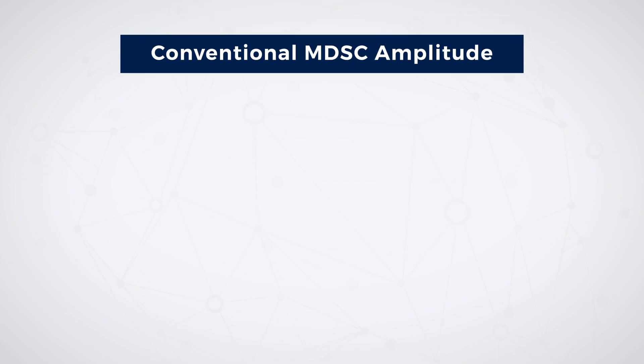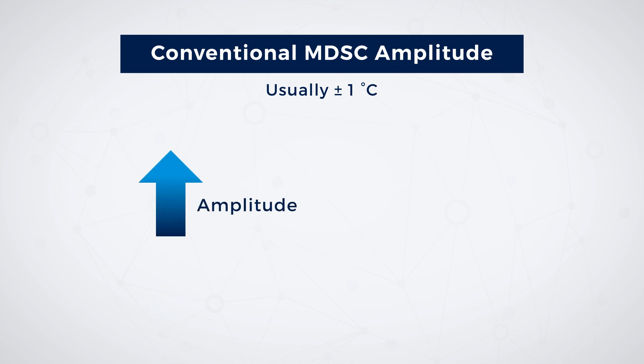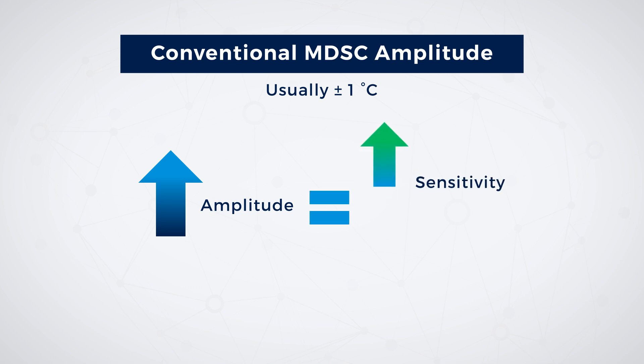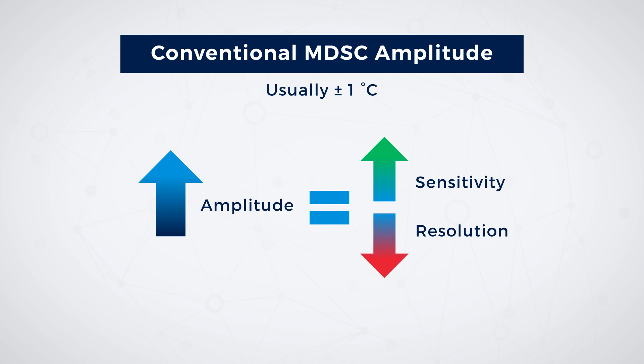The modulation amplitude is most commonly set to plus or minus one degree Celsius for conventional MDSC experiments. Larger amplitudes will result in greater sensitivity, which may be helpful in identifying hard-to-observe glass transitions. However, if the amplitude is too large, there may be a loss of resolution. A large amplitude may also adversely affect the linearity of the heat flow response, resulting in an irregular temperature modulation.